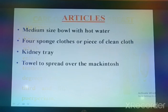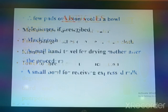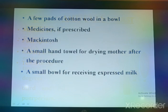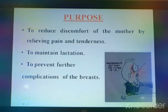Articles needed: a medium-sized bowl with hot water, four sponge cloths or pieces of clean cloth, a kidney tray, a towel to spread over the mackintosh, a few pads of cotton wool in a bowl, medicine if prescribed, mackintosh, a small hand towel for the mother, and after the procedure, a small bowl for receiving expressed milk.